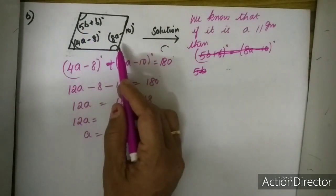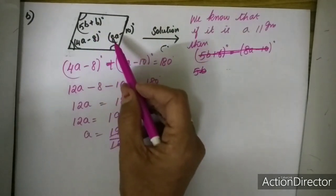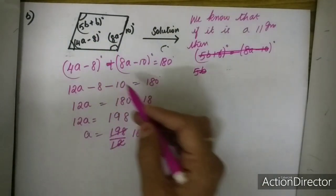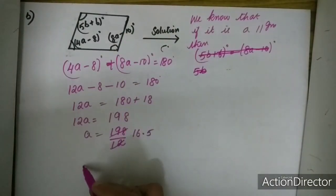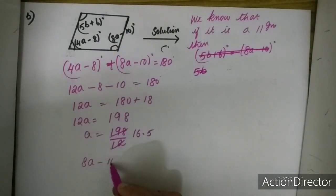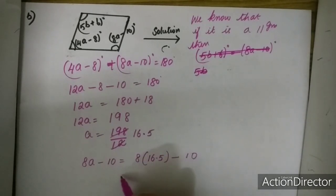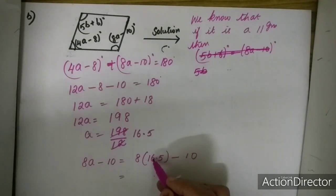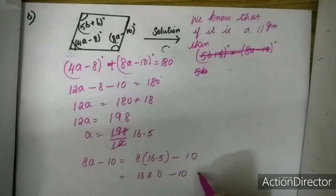Now, for finding the value of B, I am going to use the property that opposite angles are equal. But before that, let me put the value of A into 8A minus 10. So 8A minus 10 will be equal to 8 into 16.5 minus 10. 8 times 16.5 is 132, and 132 minus 10 is equal to 122.